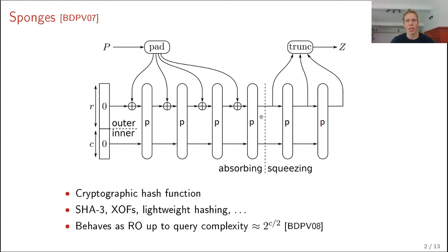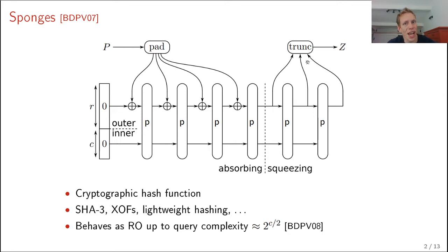After the last block and the last permutation are done, the squeezing starts — r bits at a time, interleaved with permutations until you have a sufficiently long digest. The sponge is very popular. For instance, the SHA3 hash function is based on the sponge construction. It can be used to construct PRFs, and many lightweight hash functions are based on the sponge construction.